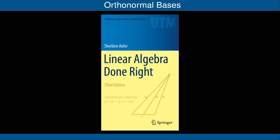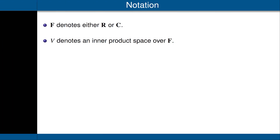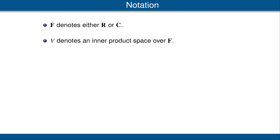Hello, I'm Sheldon Axler, the author of Linear Algebra Done Right. This video focuses on the section of the book titled Orthonormal Bases. Let's quickly review our standing assumptions. F denotes either the scalar field R of real numbers or the scalar field C of complex numbers. V denotes an inner product space over F.